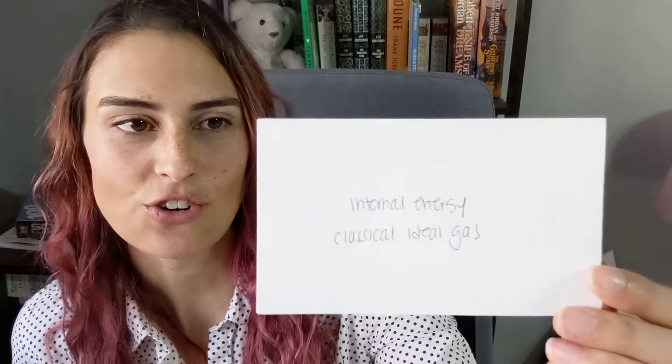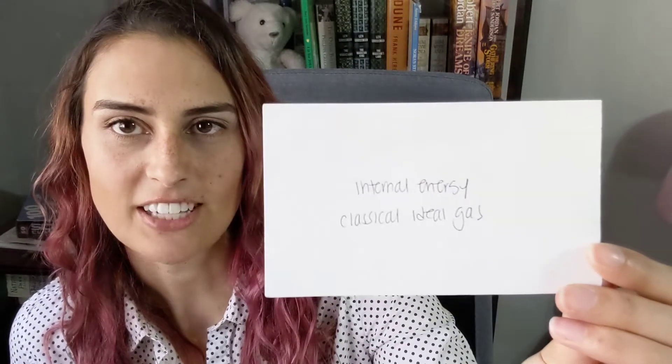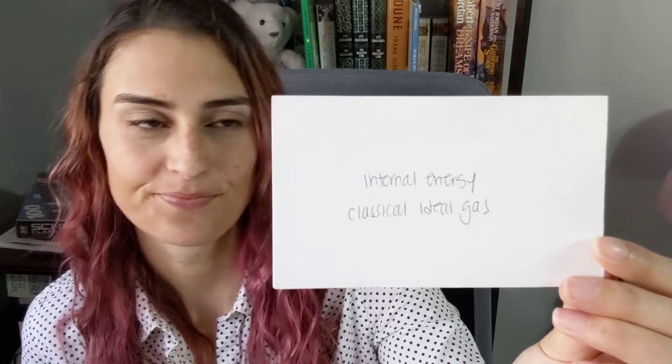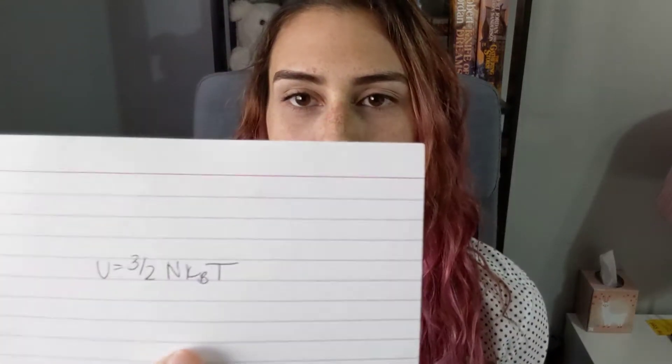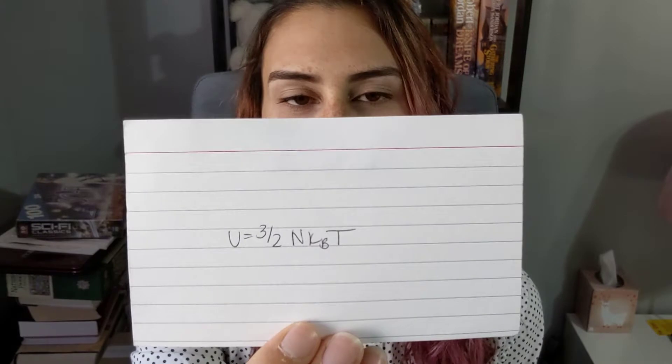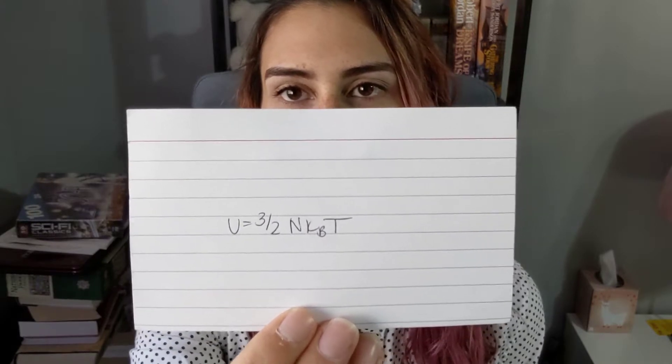Internal energy of a classical ideal gas: this is U equals 3/2 N k_B T, where k_B is the Boltzmann constant.